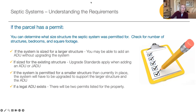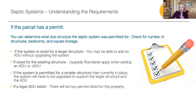If your septic system is permitted, the permit will tell you the size structure your system was permitted for. Look at the number of structures, bedrooms, and square footage. If the system is sized for a larger structure, you may be able to build an ADU without having to upgrade. If it was sized for the existing structure, upgrade standards apply when adding an ADU or junior unit. And if the system is permitted for a smaller structure, it will have to be upgraded to support the larger structure as well as the ADU.